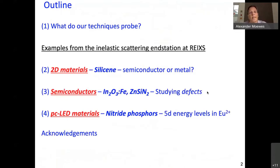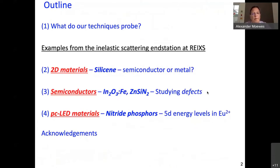My outline is I will start to explain what our techniques are probing, and then I will dive straight into examples from three research areas. We are active in 2D materials — I will talk about silicene, and there's nothing about graphene, which we also work on — and semiconductors, where I talk about how we study defects. Then I will talk about phosphor-converted LED materials and some nitride phosphors, and I conclude with acknowledgements.